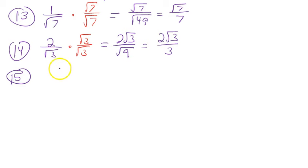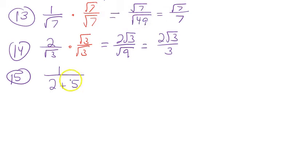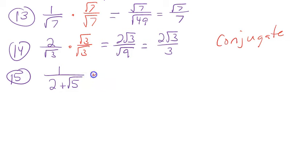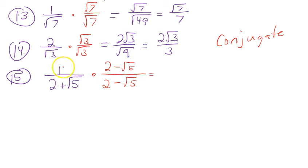Now a more complex example: 1 over the quantity 2 plus √5. You can't just multiply by √5 — it won't remove the square root from the bottom. Instead, multiply by the conjugate of the denominator. The conjugate takes the same expression but changes the sign, so use 2 minus √5 over 2 minus √5. Put the denominator in parentheses to remember to FOIL.